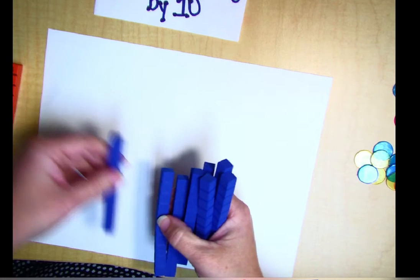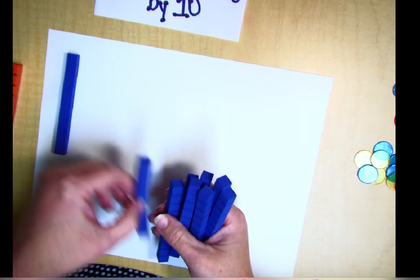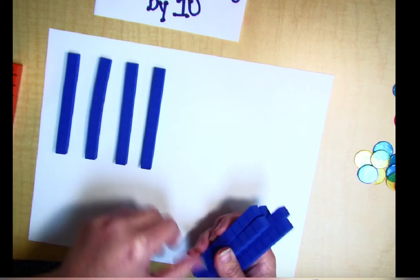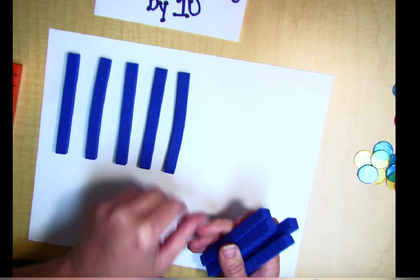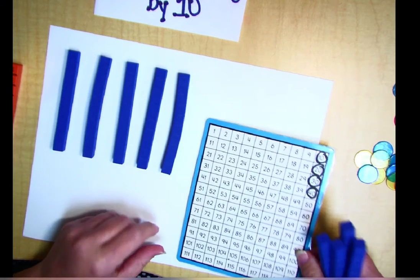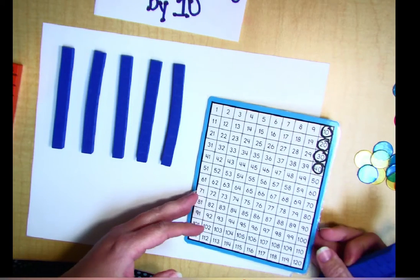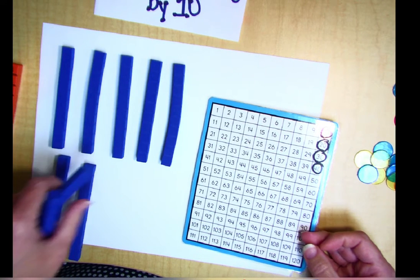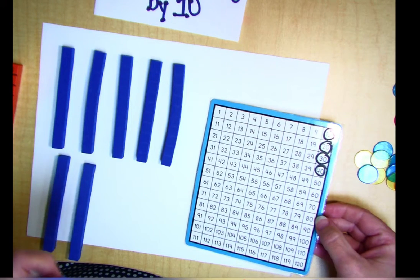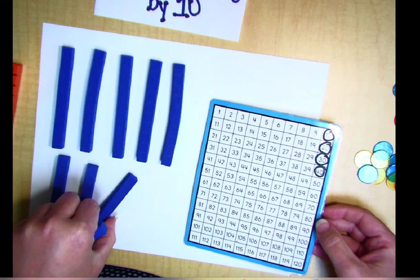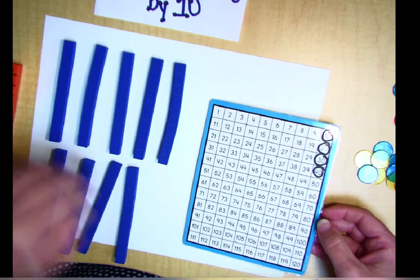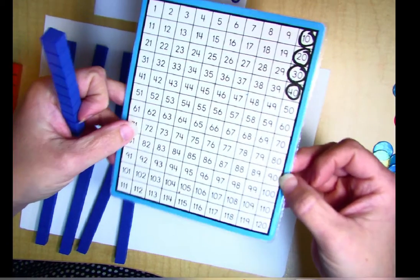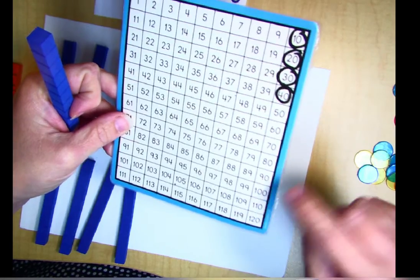So count with me as we count: 10, 20, 30, 40, 50. Put that right there so you can kind of see. After 50: 60, 70, 80, 90. And then what comes after 90? Look at your hundred board. After 90 comes 100.